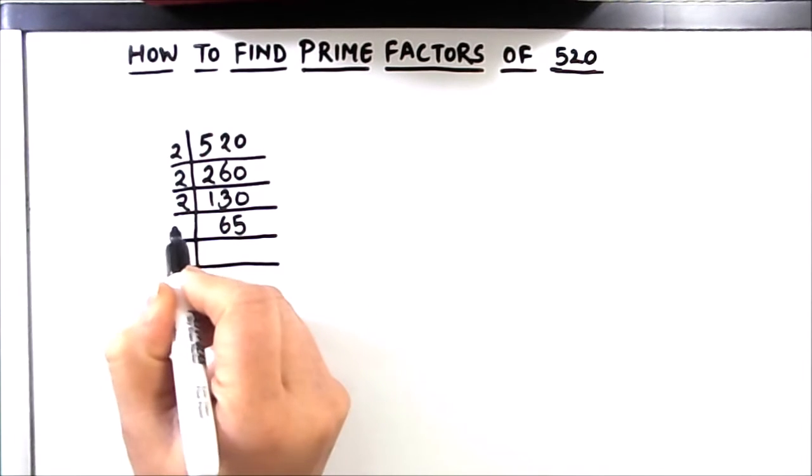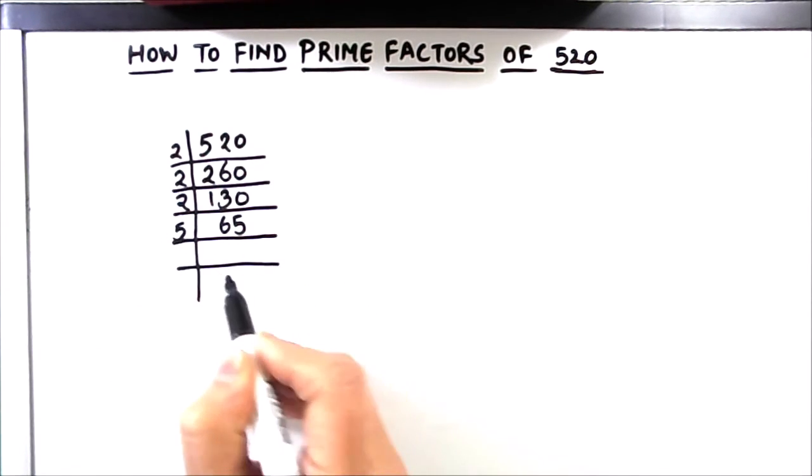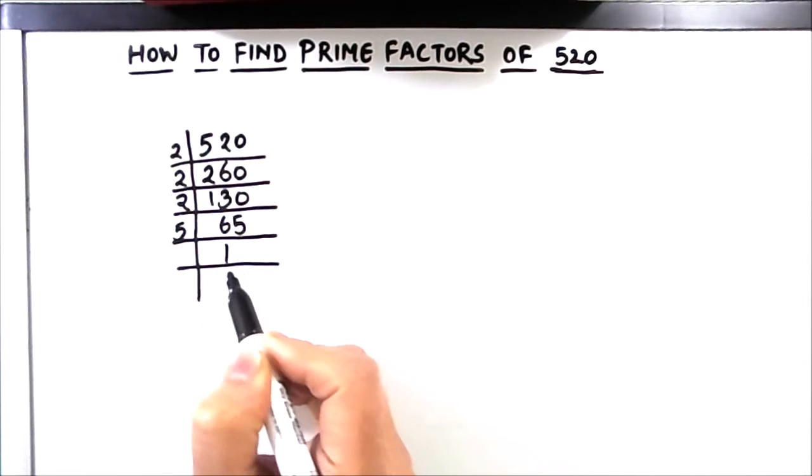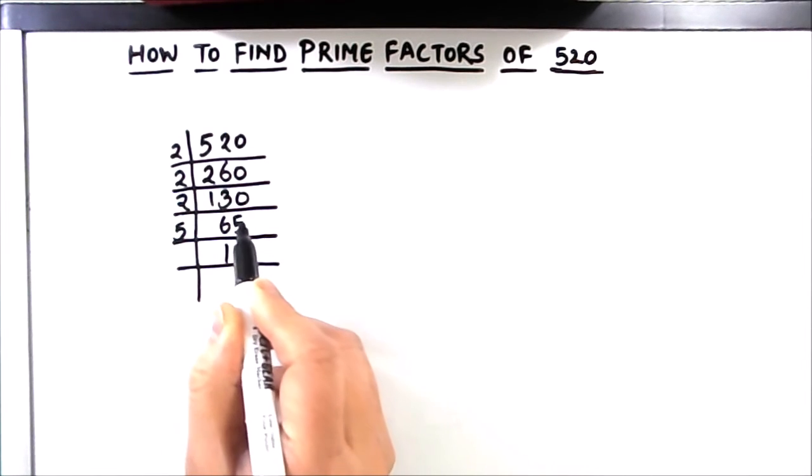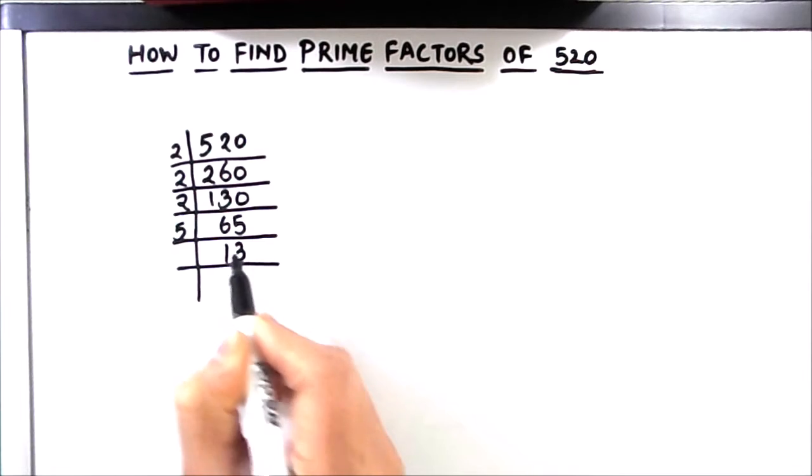Let's divide it by number 5. 5 times 1 is 5, 1 is carried over, this becomes 15. 5 times 3 is 15.